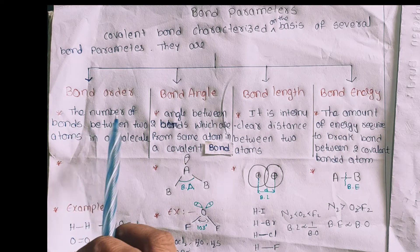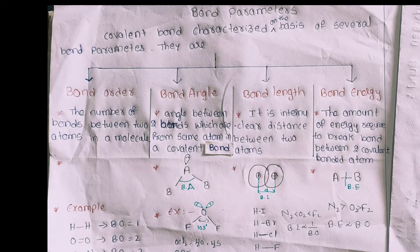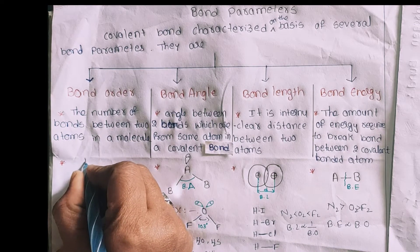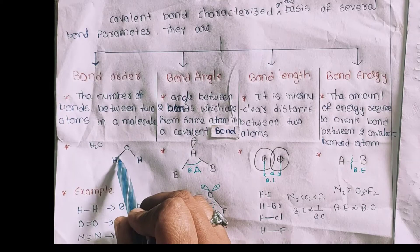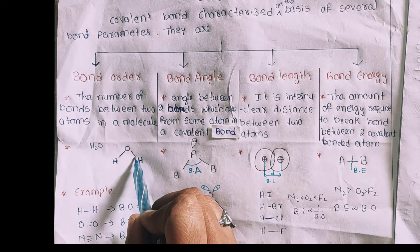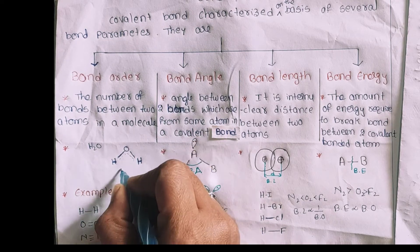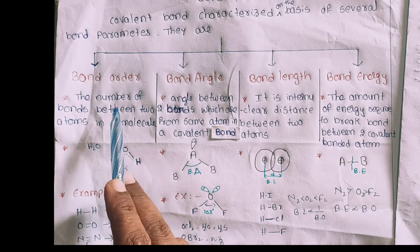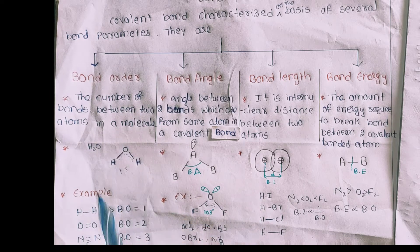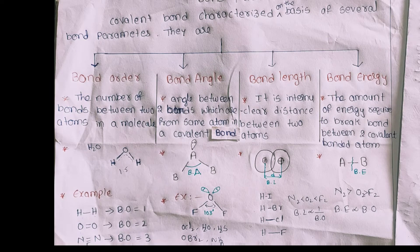First of all, Bond Order. Bond order is the number of bonds between two atoms in any molecule. For example, in the water molecule H2O, oxygen has one bond to each H, so the bond order is one. But there are some exceptions where bond order can be 1.5. For H2, there is one bond so bond order is 1. Two bonds gives bond order 2, and three bonds gives bond order 3.